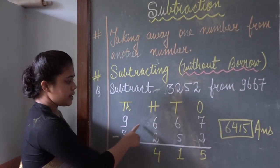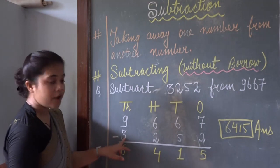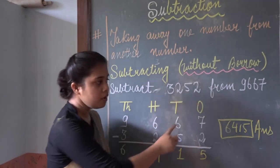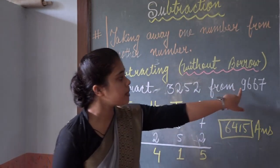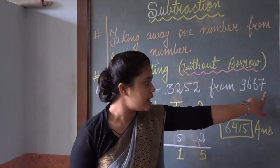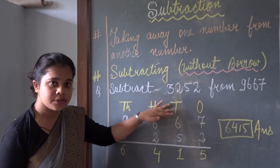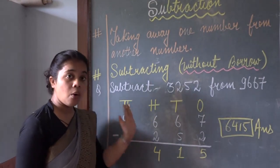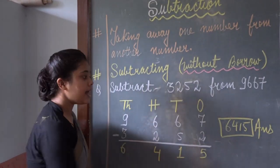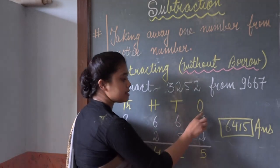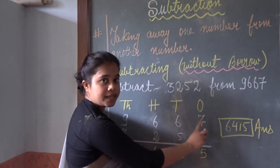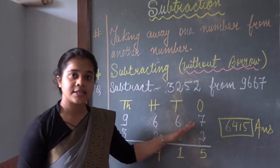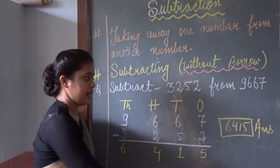So the first problem: you have to subtract or deduct 3252 from 9667. First of all, you will arrange it in columns, and always remember that you will start subtraction from one side — your right-hand side.